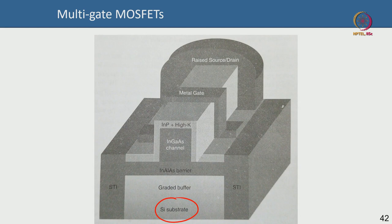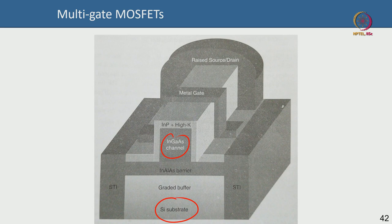Fabricating InGaAs tri-gate on silicon is complex: you grow the InGaAs channel on an InP substrate, flip it upside down, bond it to silicon, remove the InP backside, and apply various process tricks. This yields very good performance from a tri-gate InGaAs channel HEMT or INFET on silicon—it is quite impressive.